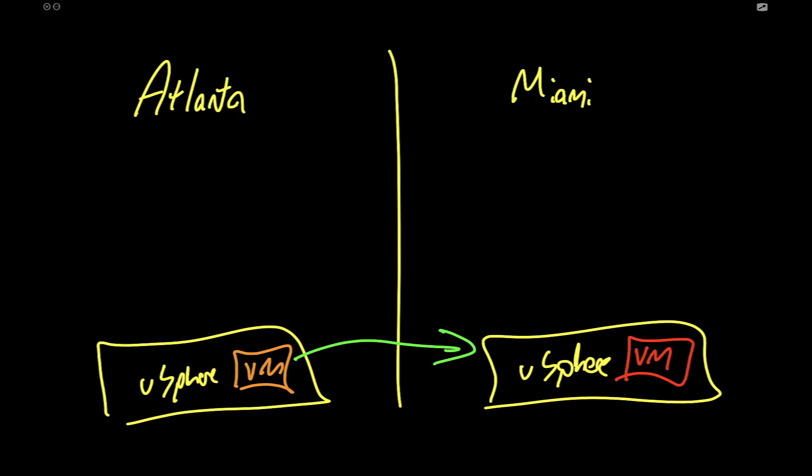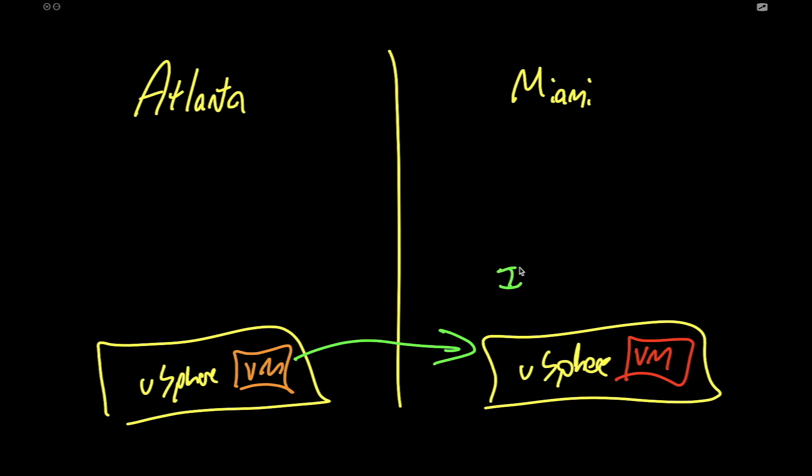So why would we want HCX? Well, the problem is when that VM lands over here, what's its IP address? It can't be on the network it was just on because we haven't stretched that network. So it will have to be re-IP.